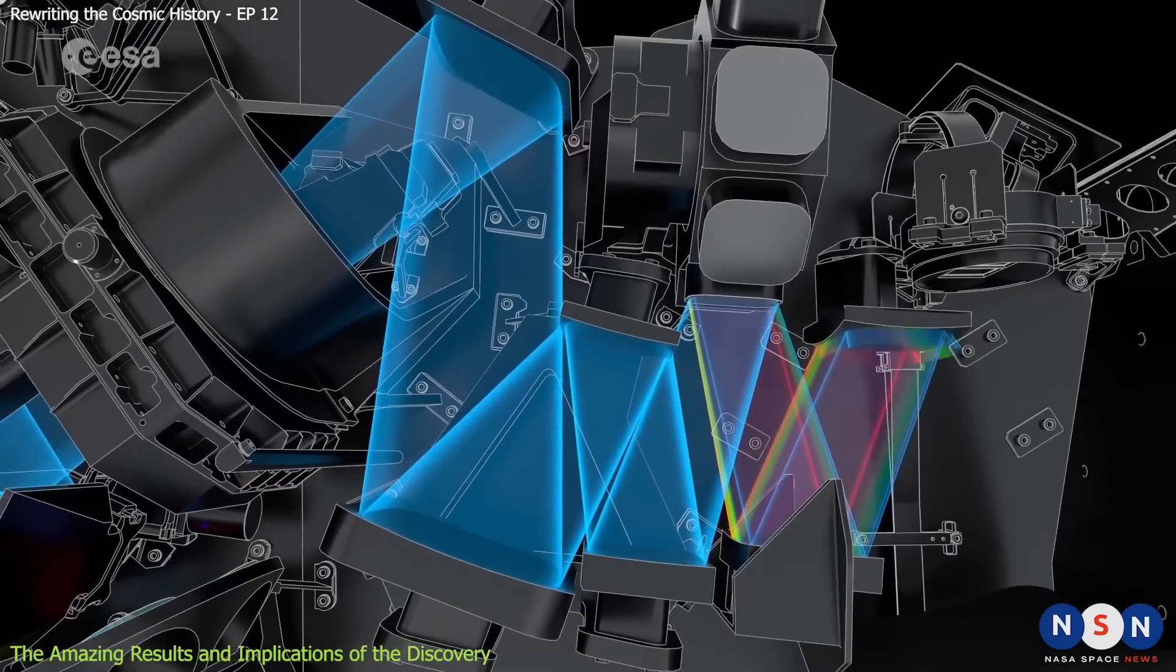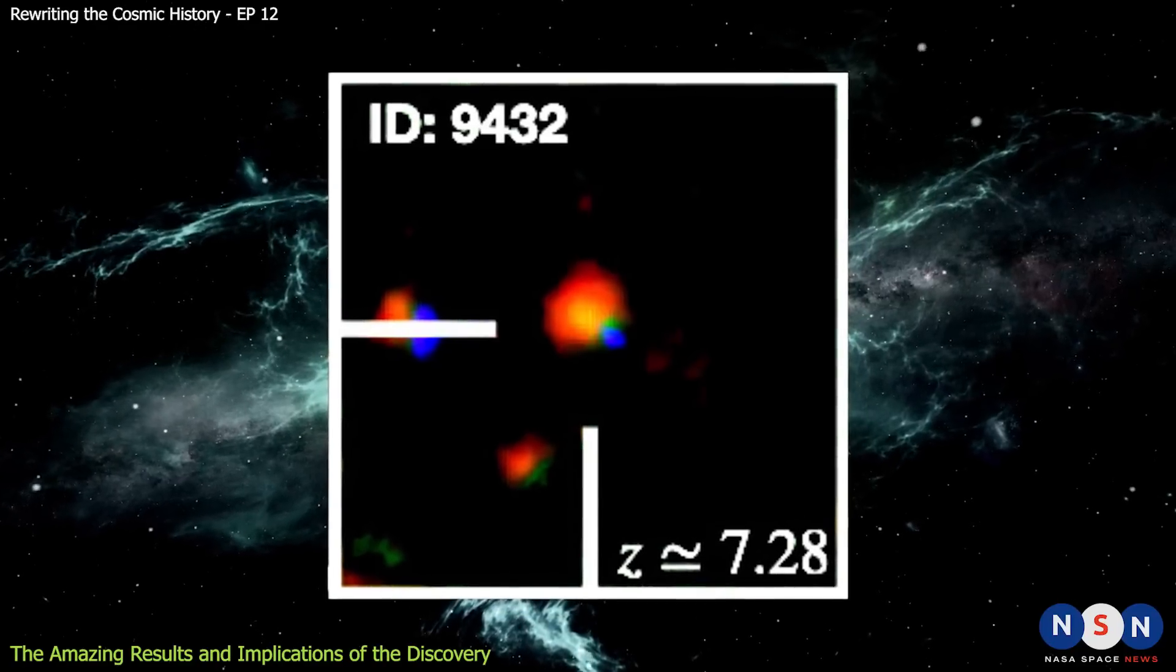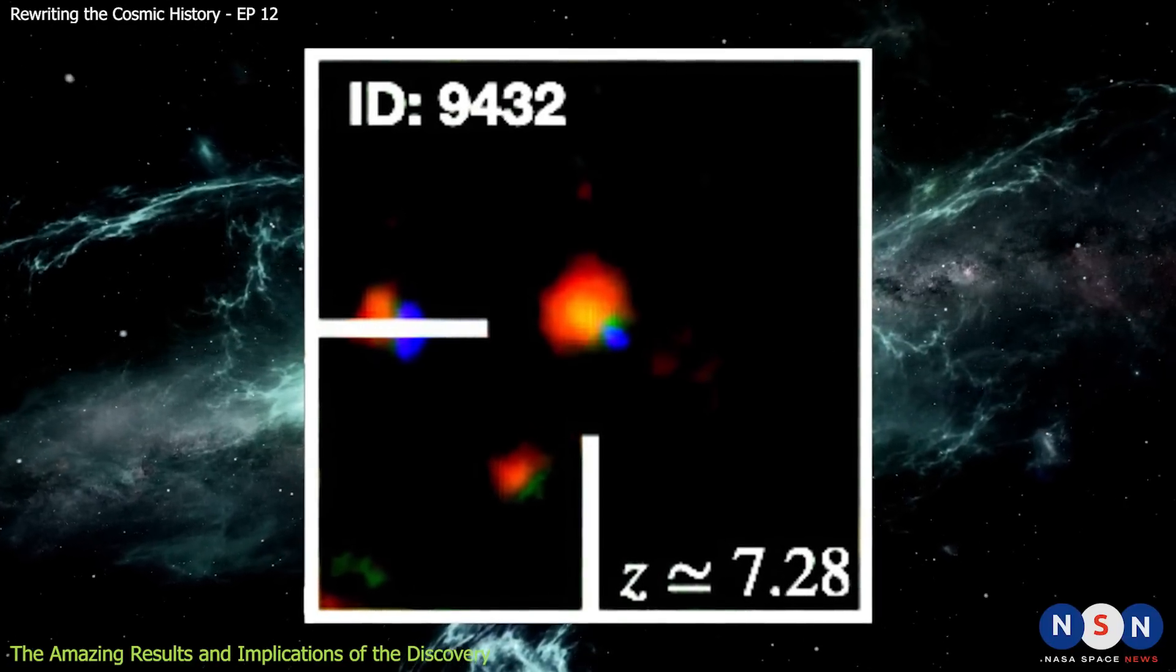MIRI also had to use four different wavelength bands to see the star formation, which is redshifted by a lot due to the expansion of the universe.